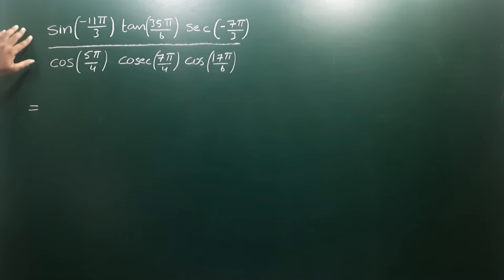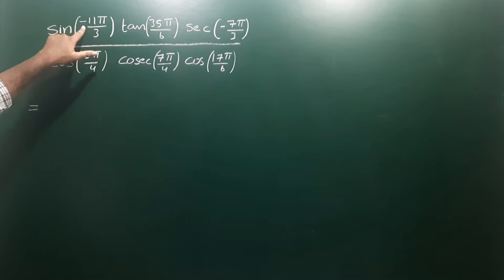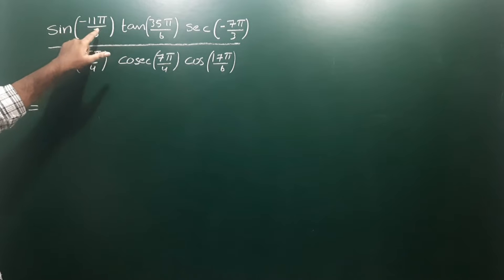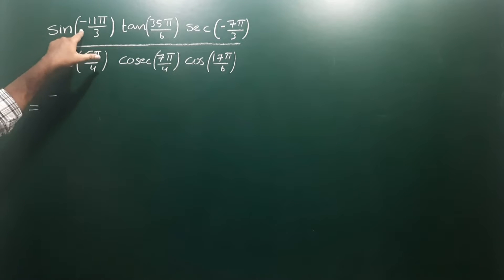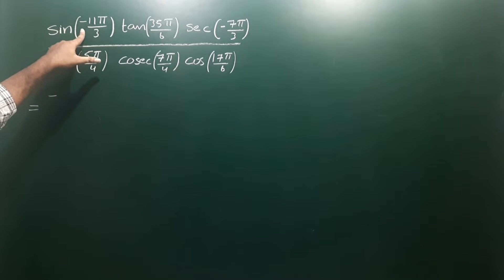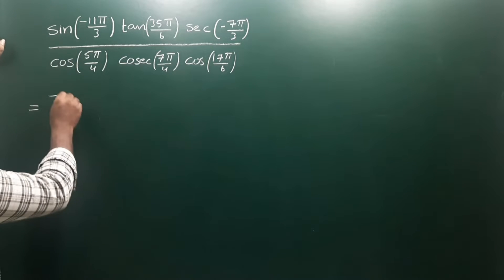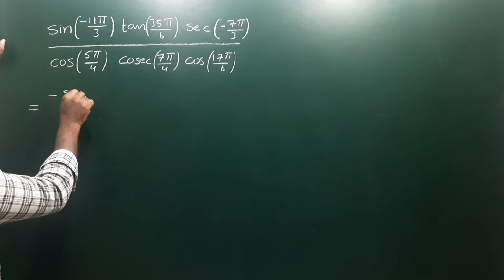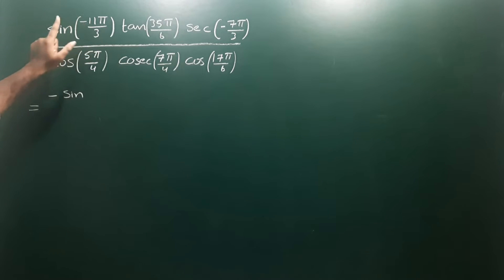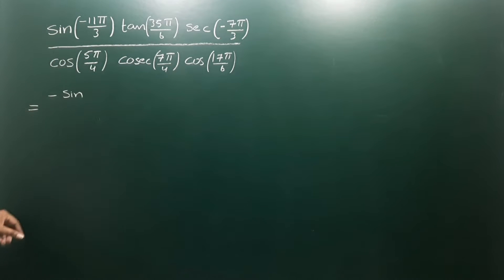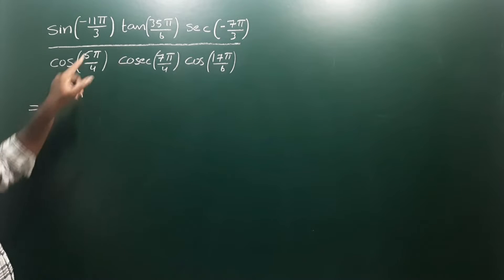Let us see that sin(-θ) — sin of a negative angle means minus sin θ. Negative angles are in the fourth quadrant. In the fourth quadrant, sin is negative, therefore sin(-θ) can be written as minus sin θ. So the negative angle is in the fourth quadrant.